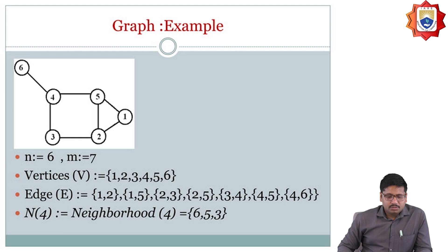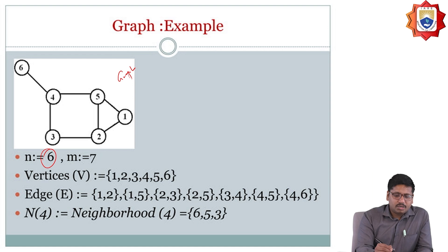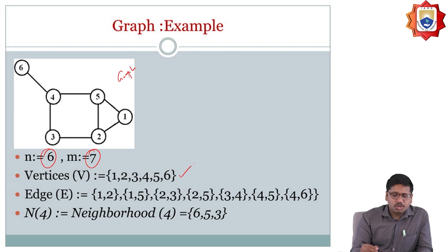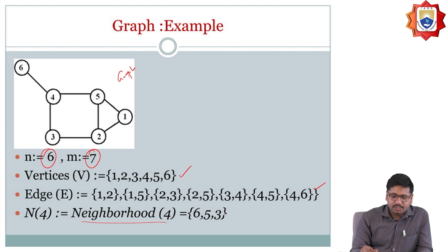Here is a simple example of presenting a graph. In this case the number of vertices n is 6 and number of edges m is 7. The vertex set is going to be represented as {1, 2, 3, 4, 5, 6} and the edge set is represented as {(1,2), (1,5), (2,3), (2,5), (3,4), (4,5), (4,6)}. The neighborhood of 4 — N(4) — is going to be {6, 5, 3}.